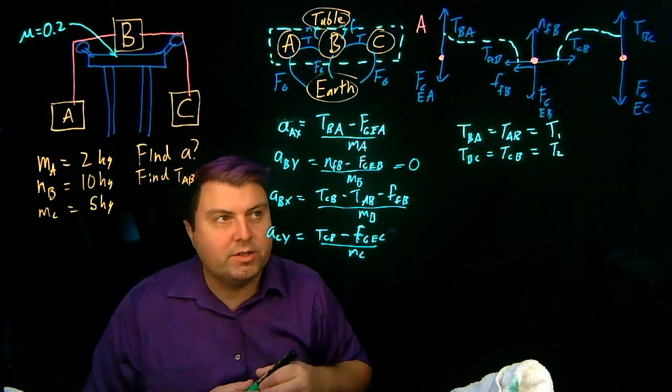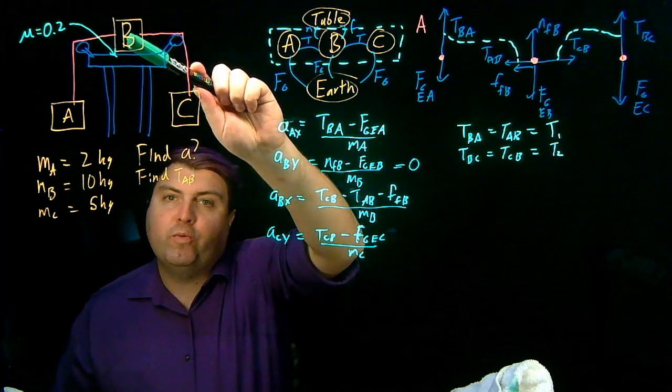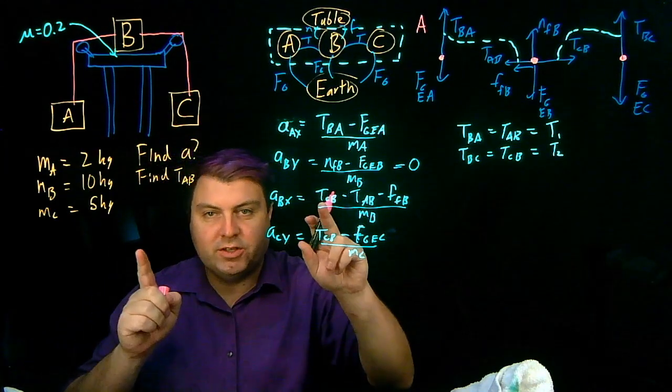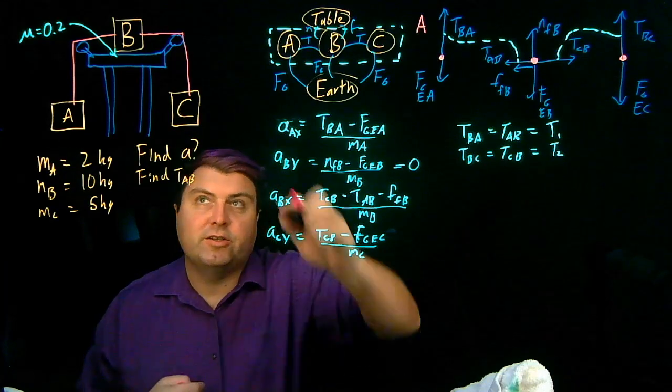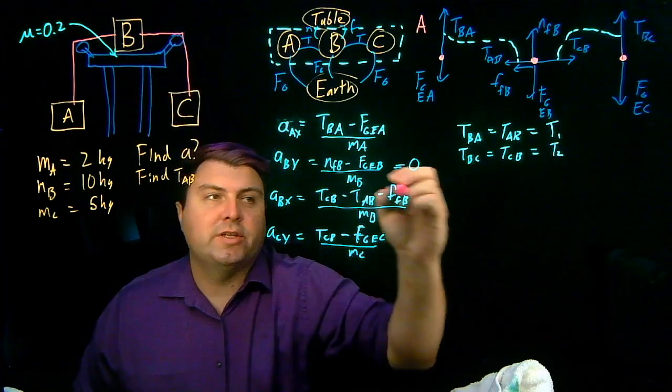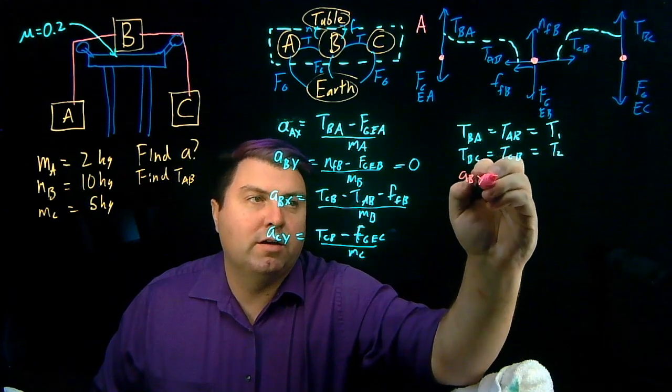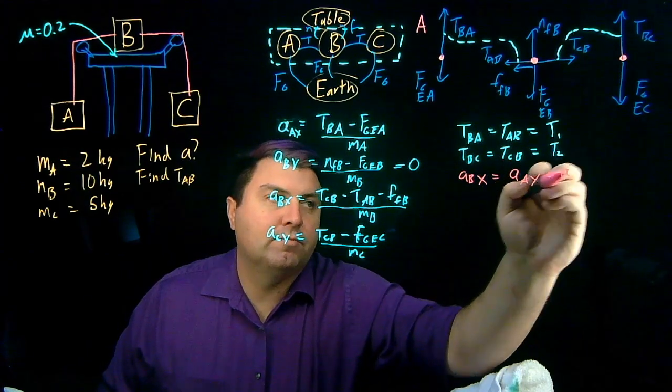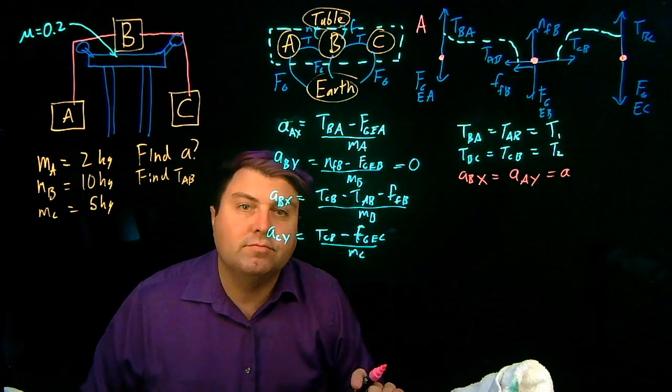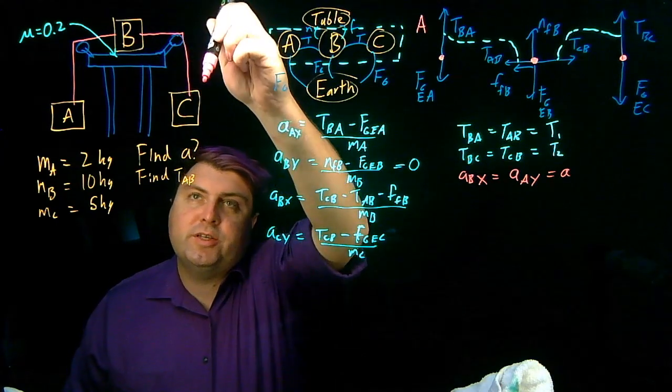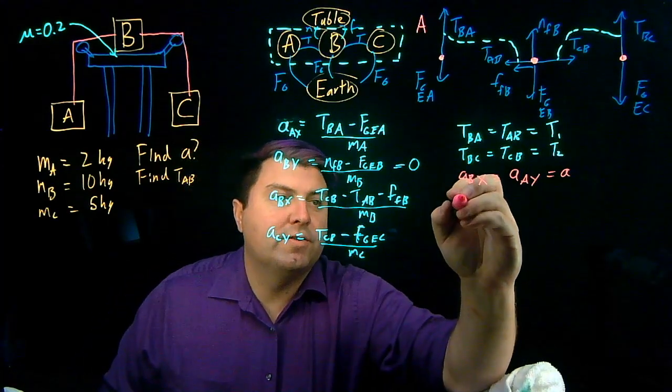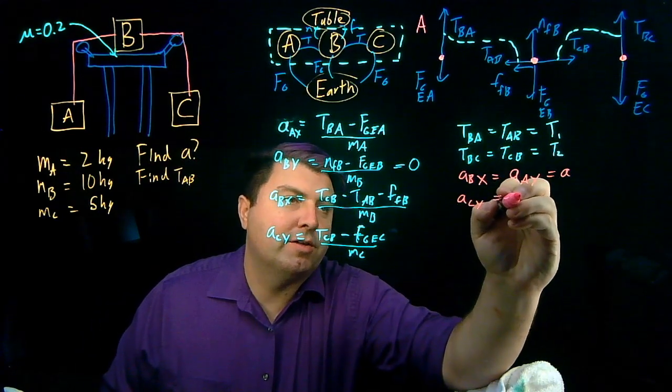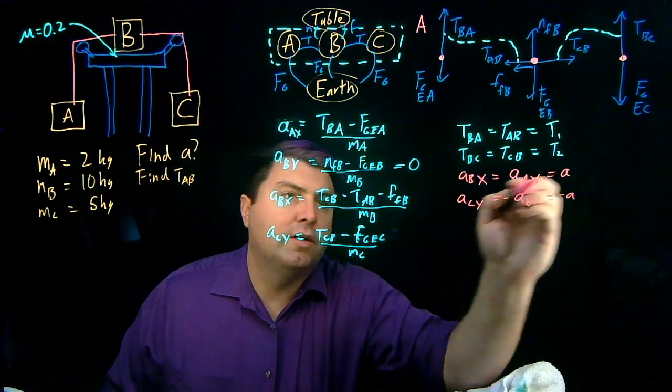But for other things, we don't know necessarily what's going on, except we can think when B moves forward, A is going to move up. So how we can express that in terms of position or velocity, we really care about is acceleration. So when B accelerates forward, A will accelerate up. We can say that ABX is equal to AAY, which is equal to A. We can think of C when B moves forward, C is going to move down. So then ACY is equal to negative ABX is equal to negative A.